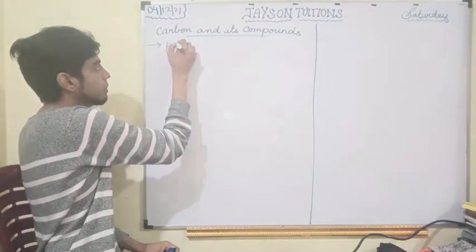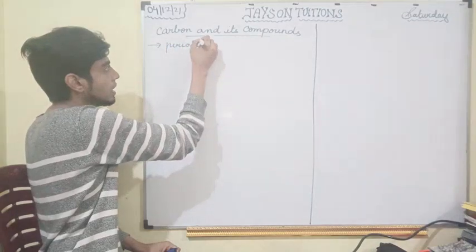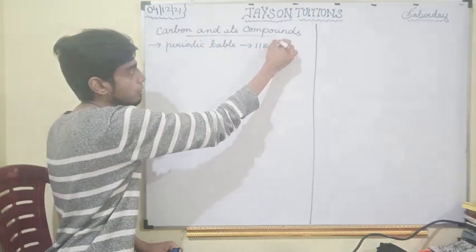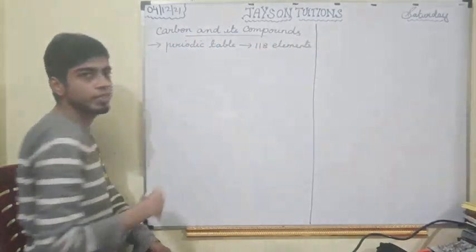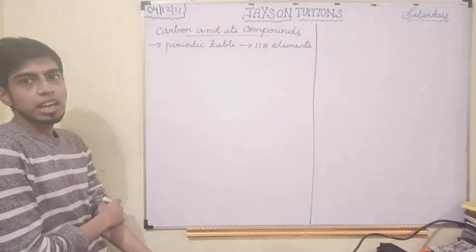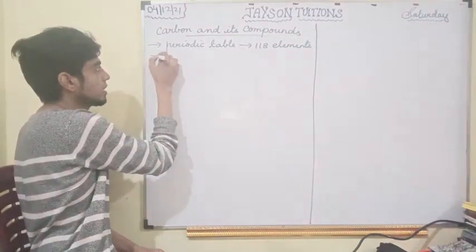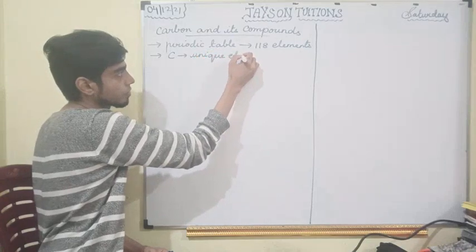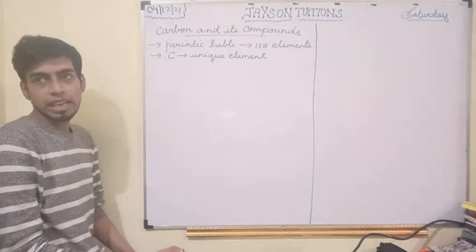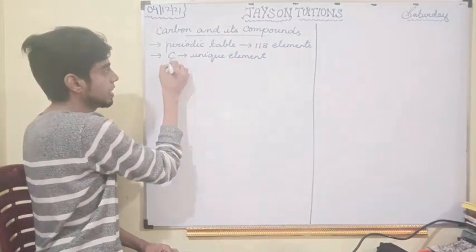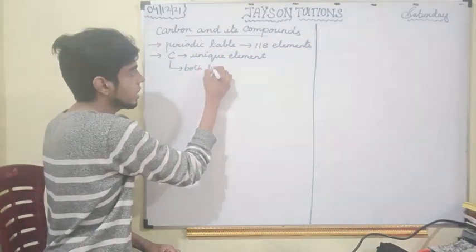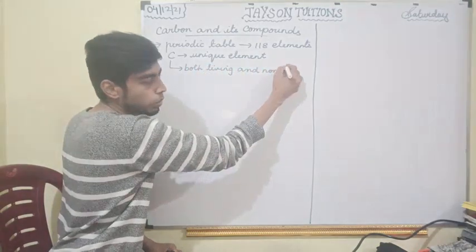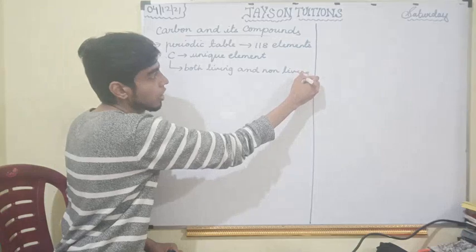In the periodic table, there are 118 elements. Among the 118 elements, carbon is a very unique element. Why is carbon a very unique element? Because it is present in both living and non-living things.